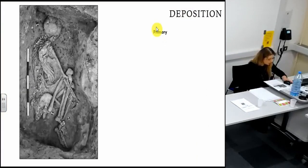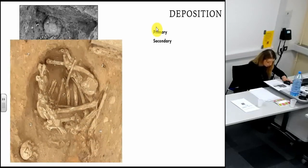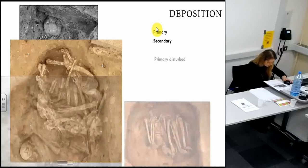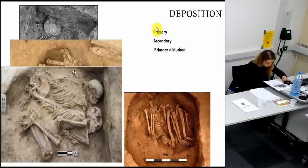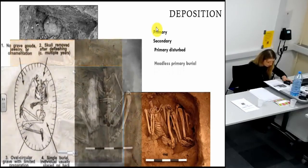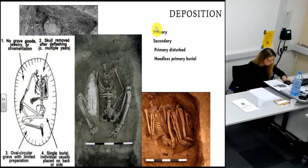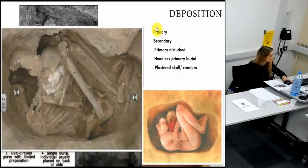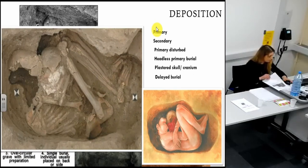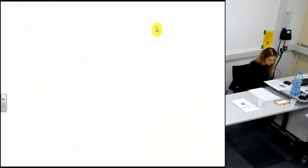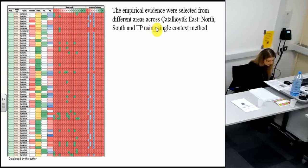Most burials are primary — the field placement of fully articulated individuals. But some might be secondary, meaning that at some point after burial, the body or parts of the body were intentionally exhumed and reburied or treated in an alternative location. Many skeletons are clearly disturbed, and some burials contain only crania, while others contain individuals with their skull removed or the body in its entirety. Burials are also generally located under the floor, but sometimes are deposited in the fills of old buildings. The empirical evidence was selected from different areas across Catalhoyuk East, North, South, and the TPC area.